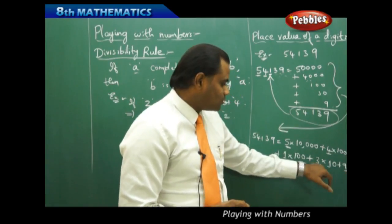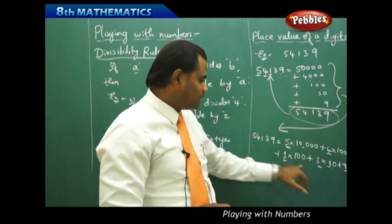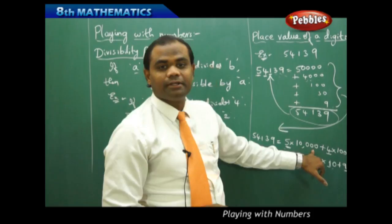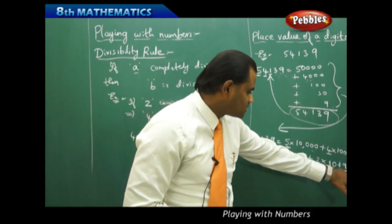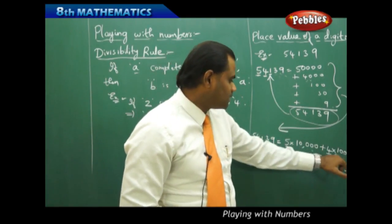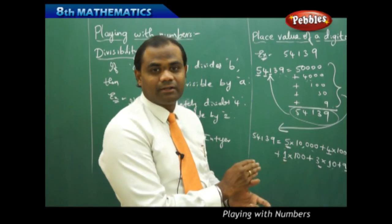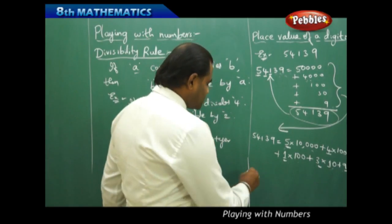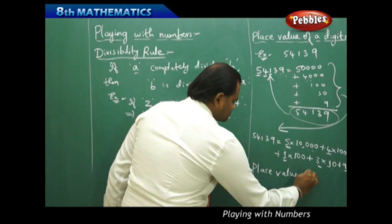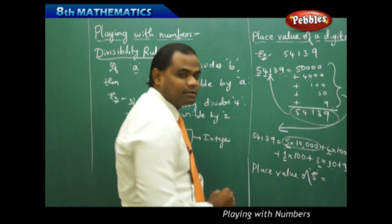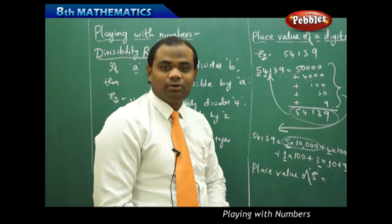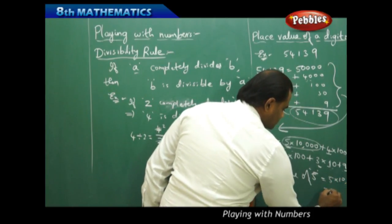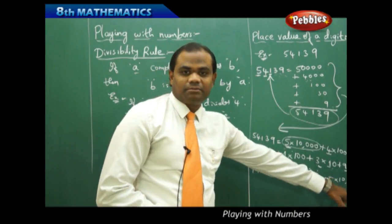The digit 9 is in the units place. The digit 3 is in the tens place, because it is multiplied by 10. The digit 1 is in the hundreds place. The digit 4 is in the thousands place. And the digit 5 is in the ten-thousands place. Now, the place value of 5 is defined as the complete first term in the expanded form: 5 times 10,000, which equals 50,000. So the place value of 5 is 50,000.